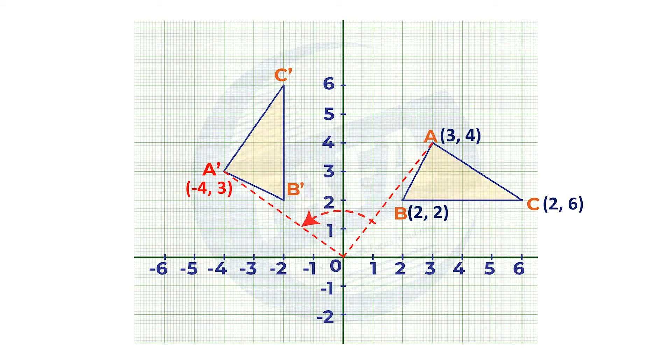Also, to obtain B prime, which is the image of point B, you join O to B using a straight line. Then you measure 90 degrees in anti-clockwise direction, and measuring the distance from O to B, the same distance should be from point O to B prime. So B prime will be on the coordinate negative four three.